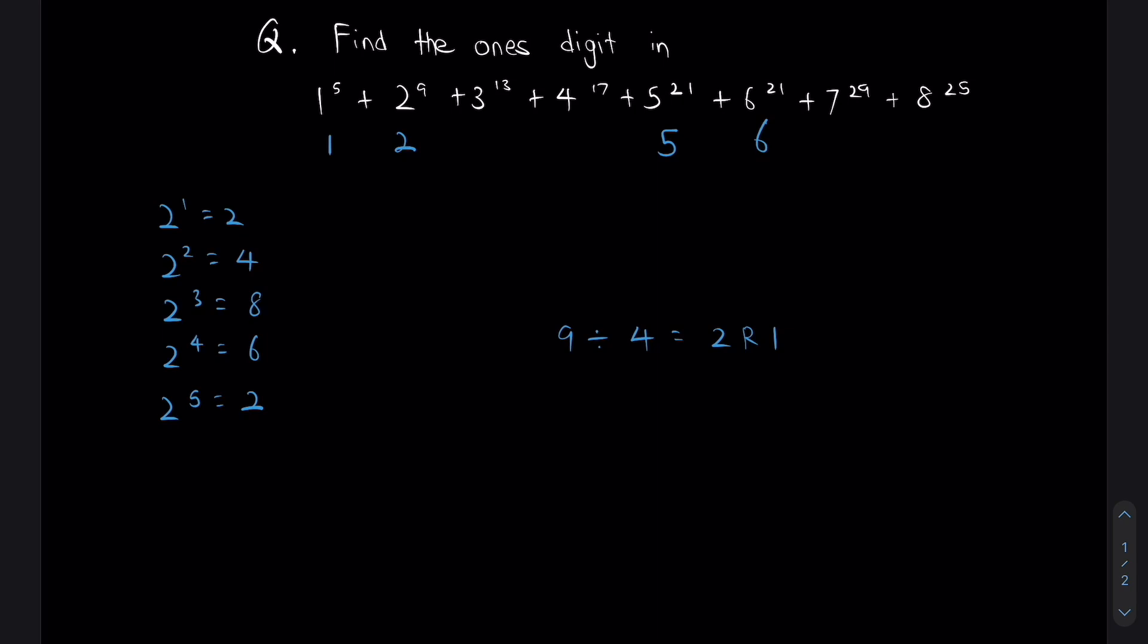Now for 4, 4 is a pretty easy number to look at as well. So for 4, let me write it here. For 4, if odd power ones digit is 4, if even power ones digit is 6. So 4 to the power of 17, 17 is an odd number, right? Which means my ones digit for 4 to the power of 17 will be 4.